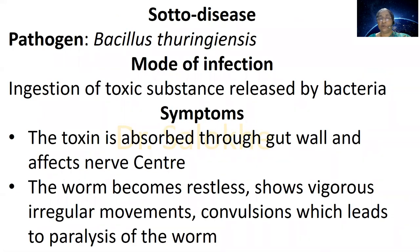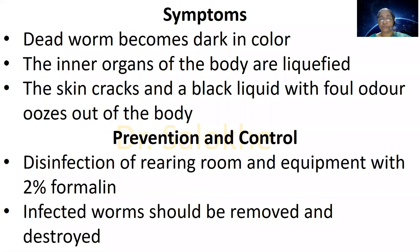The next disease is Soto disease. The pathogen is Bacillus thuringiensis. Mode of infection is ingestion of toxic substance released by the bacteria. The toxin is absorbed through the gut wall and affects the nerve center. As the nervous tissue is affected, the worm becomes restless, shows vigorous irregular movements and convulsions, leading to paralysis. Dead worm becomes dark in color, the inner organs are liquefied, and the skin cracks — a black liquid with foul odor oozes from the body. Prevention and control: disinfection of rearing room and equipment with 2% formalin, and removal and destruction of infected worms.